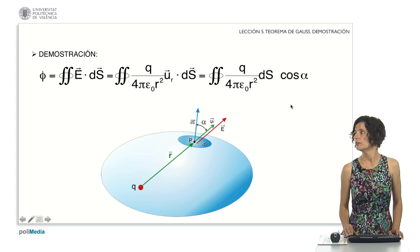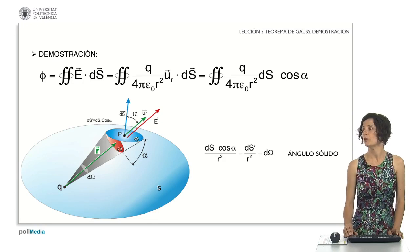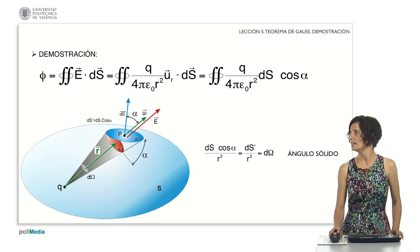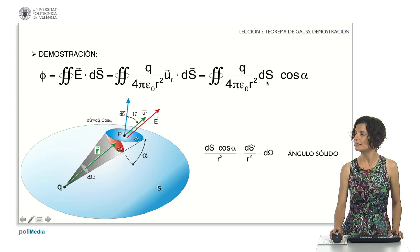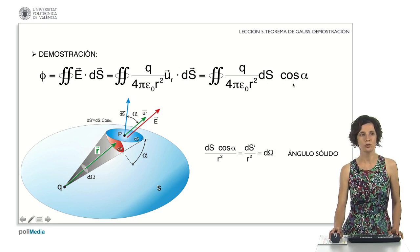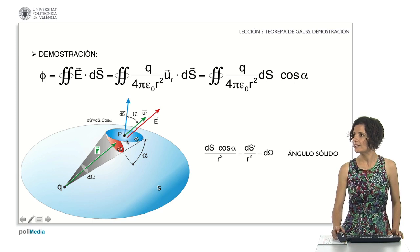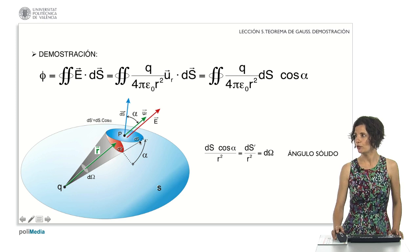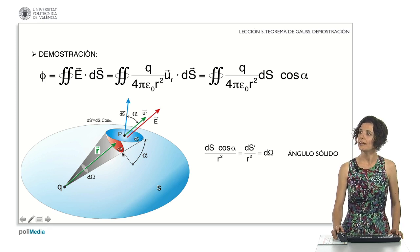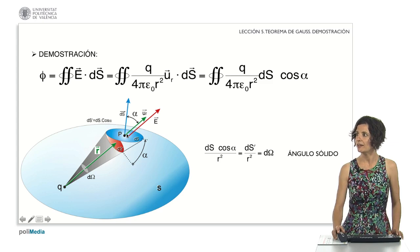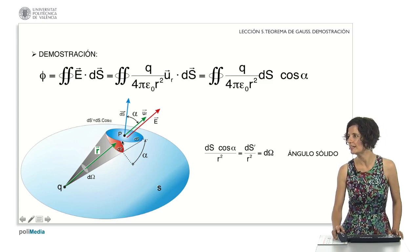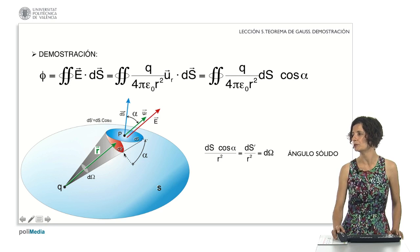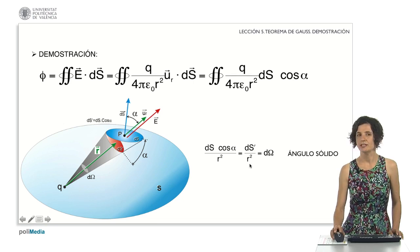To continue with the demonstration, we have to define the concept of solid angle. In the expression we have arrived at, the term differential area times cosine of alpha appears. The differential area is the area painted in blue. If we multiply it by cosine of alpha, we obtain its projection on the plane perpendicular to the u sub r direction — that is the area painted in red, which we call differential area prime.